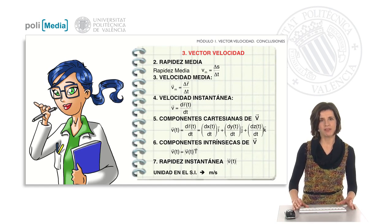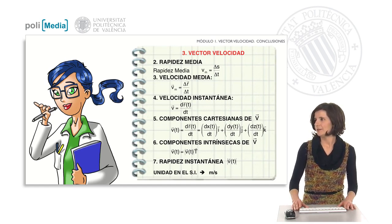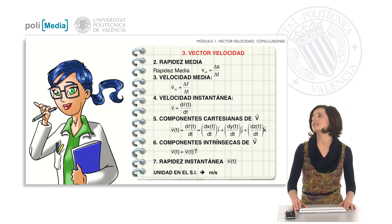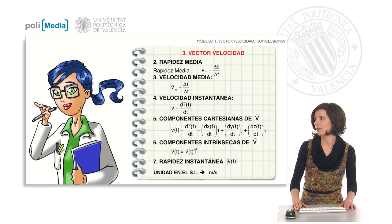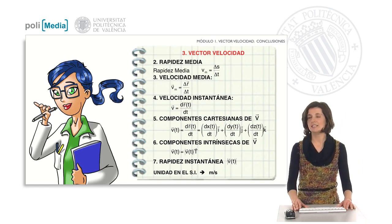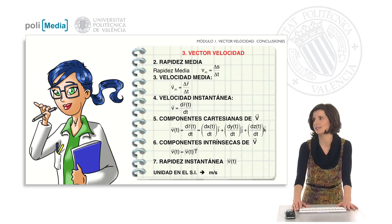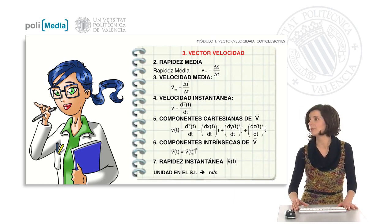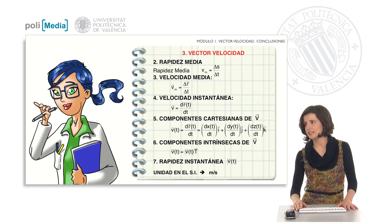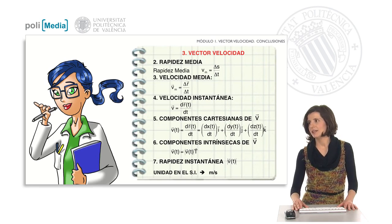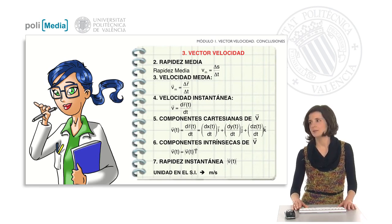The average velocity is the displacement vector divided by the increment of t. The instantaneous velocity is the derivative of the position vector with respect to time. The latter can be expressed by its Cartesian or intrinsic components. Finally, the modulus of the instantaneous velocity is called instantaneous speed, and all these physical quantities are measured in the international system in meters per second.